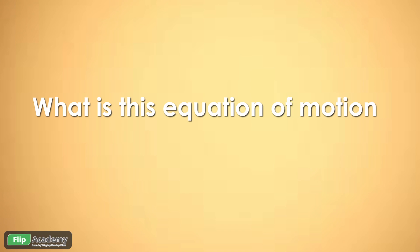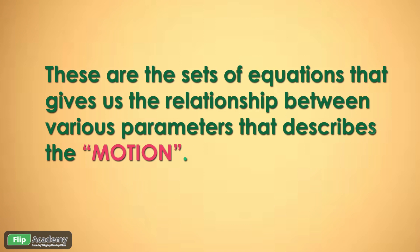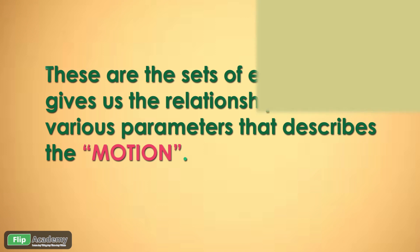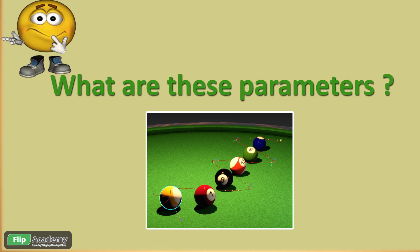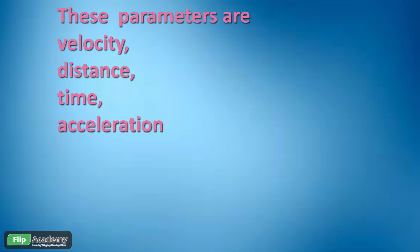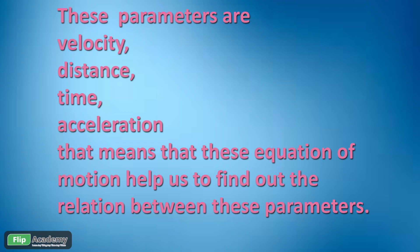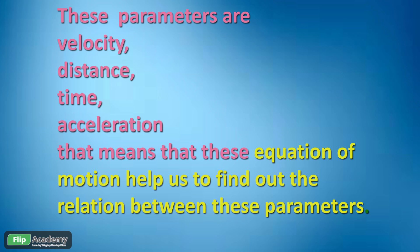First, let us see what is this equation of motion. Equations of motion are basically a set of equations that gives us the relationship between the various parameters that describe the motion. The parameters we are talking about are the velocity, the distance, the time, and the acceleration. In one line, equations of motion help us find the relation between these 4 parameters.